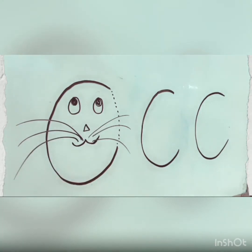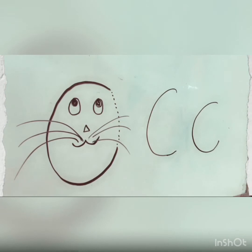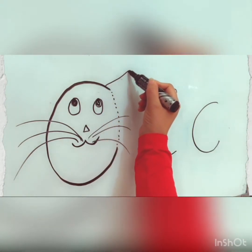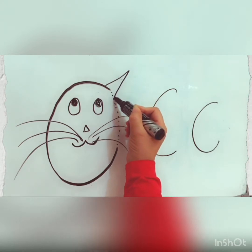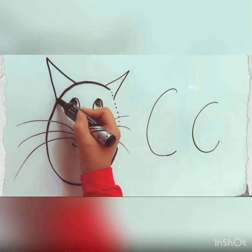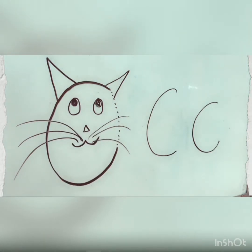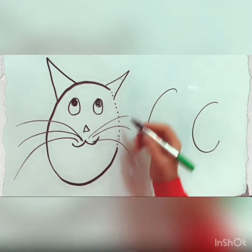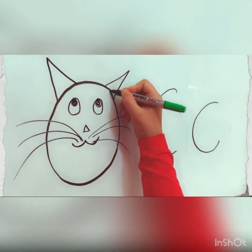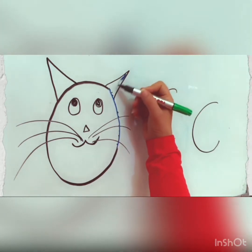C for cat! Now we will draw two ears here — just look at my hand. Very good, excellent — one and another ear. Wow, it has two ears! Now we will color and trace it together. First of all, we will trace this one, okay, then we will color — look at my hand.